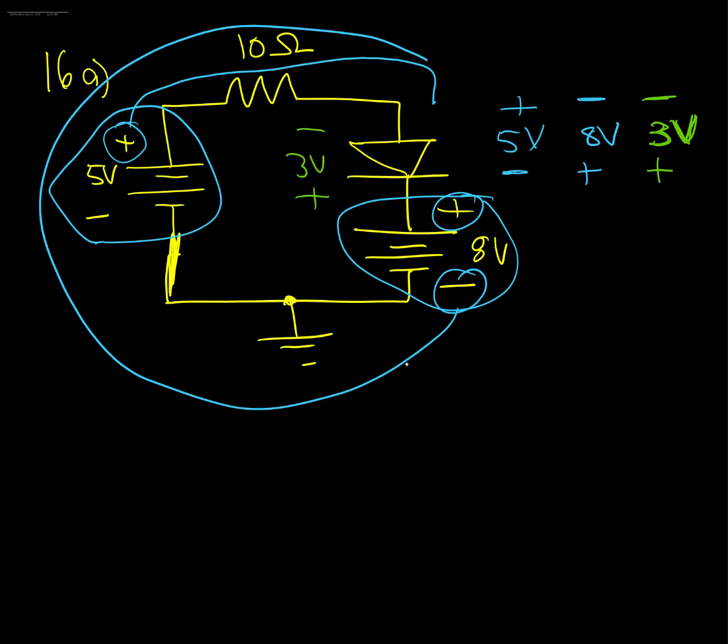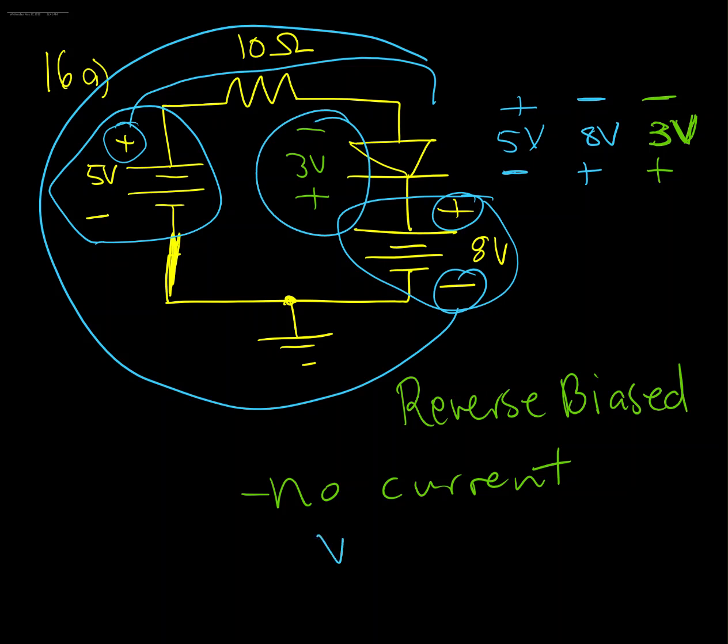So the diode is going to be reverse biased which means the diode is opposing current flow so there's no current flow. And then the voltage across that diode is going to be that full voltage drop, so the VD, the voltage across the diode, is going to be three volts in that direction that I've shown there on the diagram.